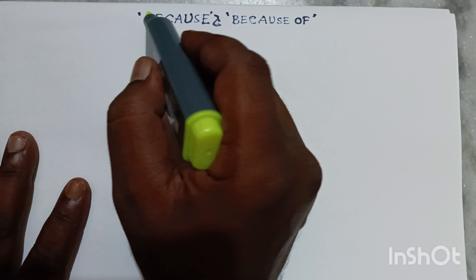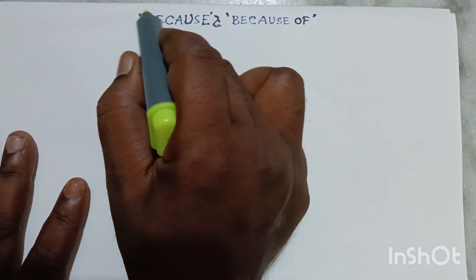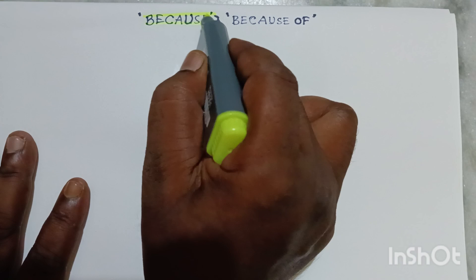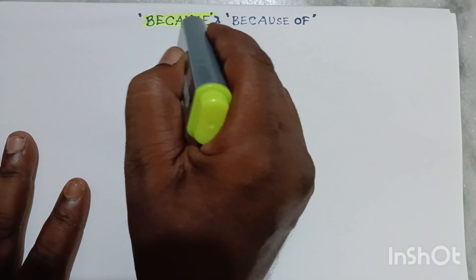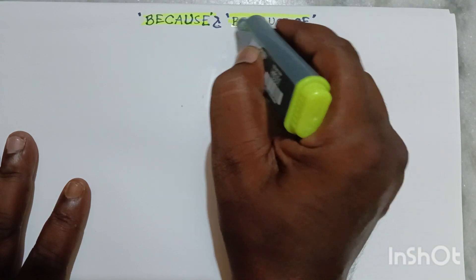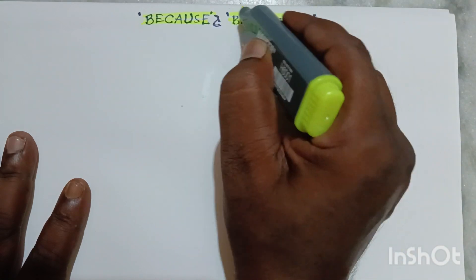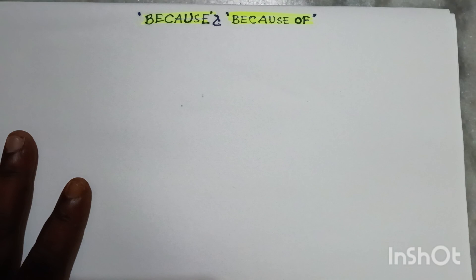Hello my dear friends, thank you very much for clicking ABC English. Today we will discuss the usage of 'because' and 'because of.' These two words sometimes disturb us a lot because we make different types of mistakes in our exams.